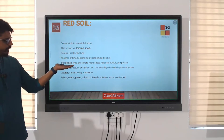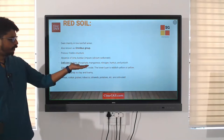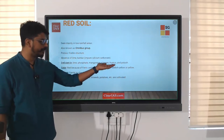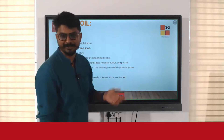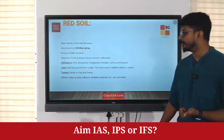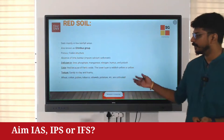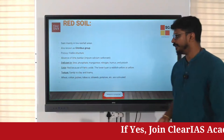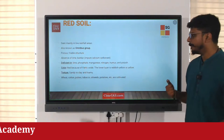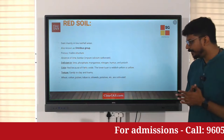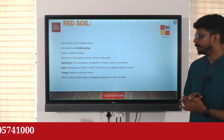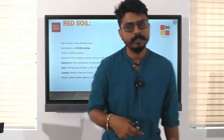Red soil is deficient in lime, phosphate, manganese, nitrogen, humus, and potash. So it is deficient in a lot of things. Remember: lime, phosphate, manganese, nitrogen, humus, and potash.